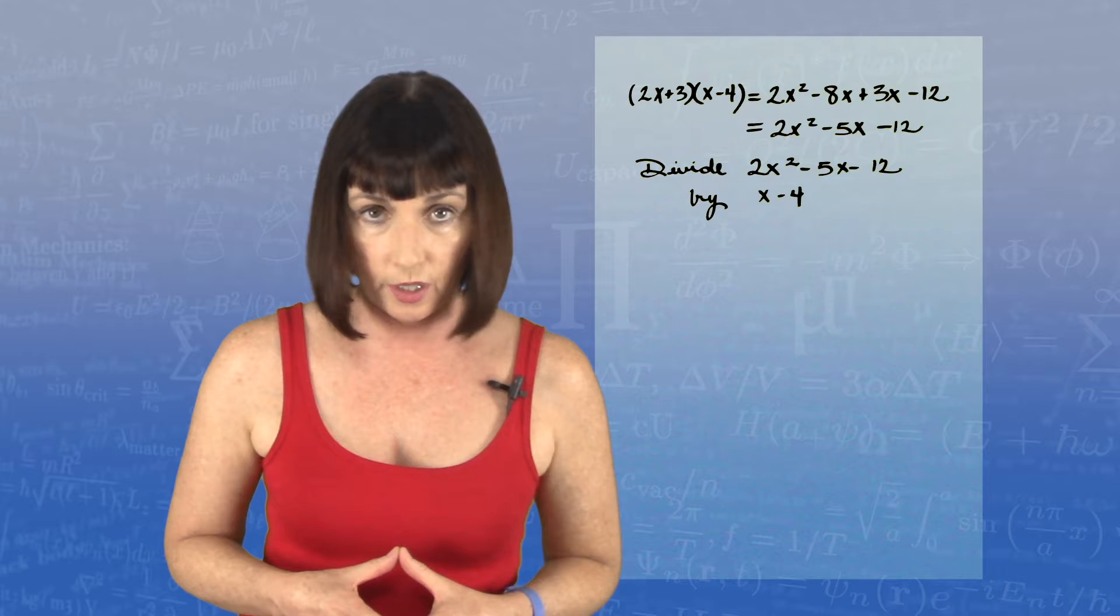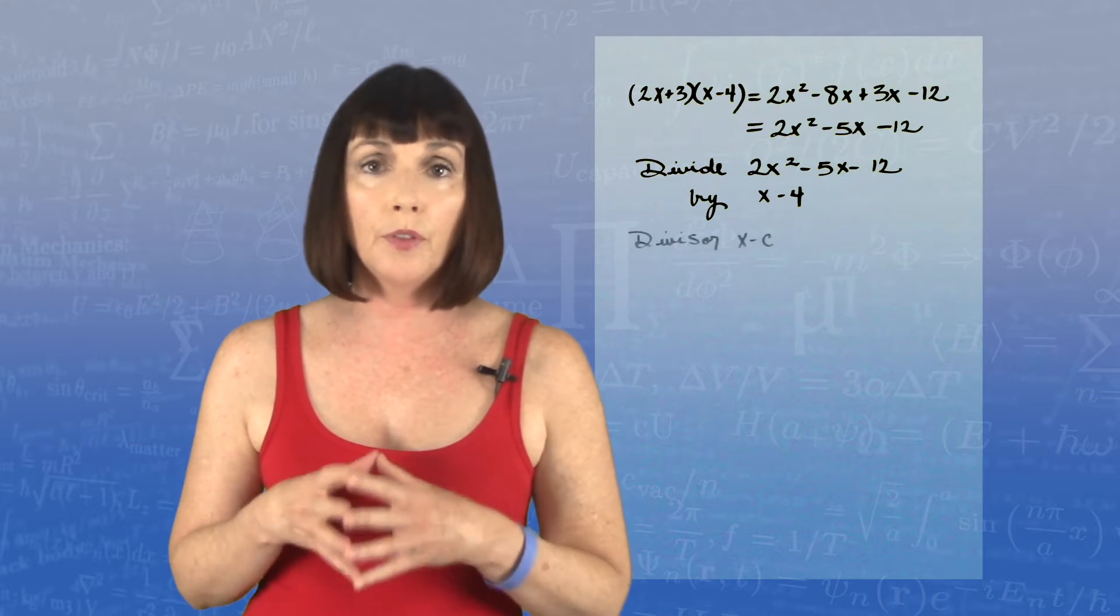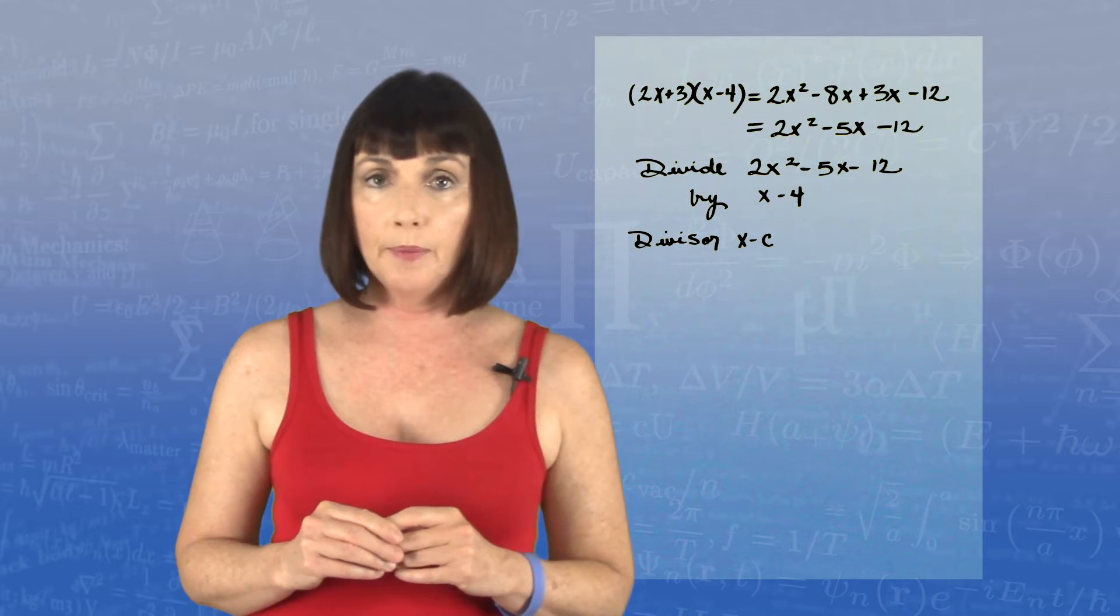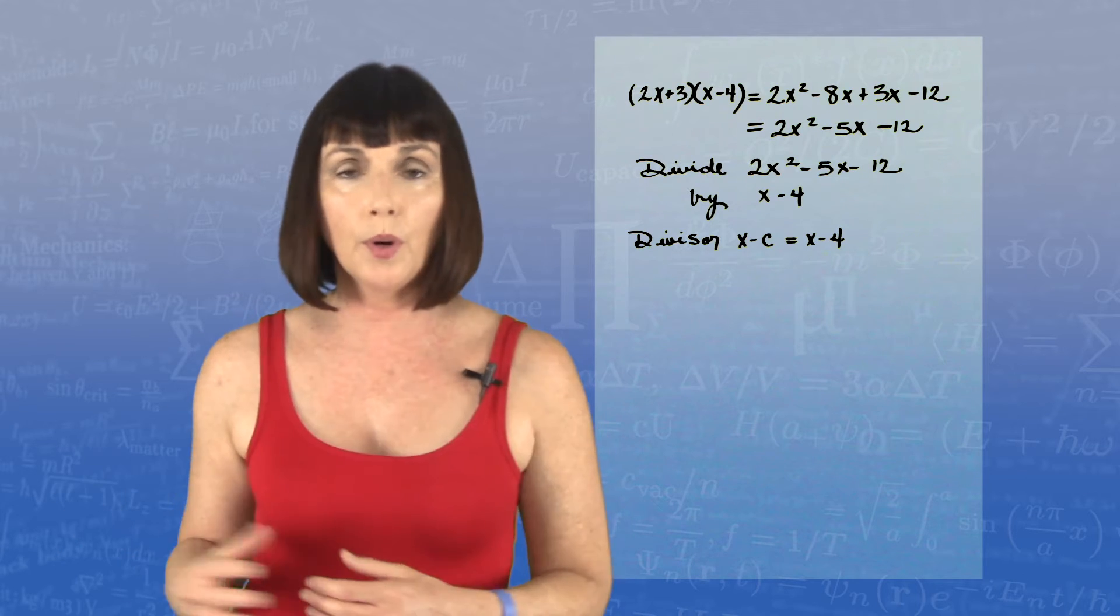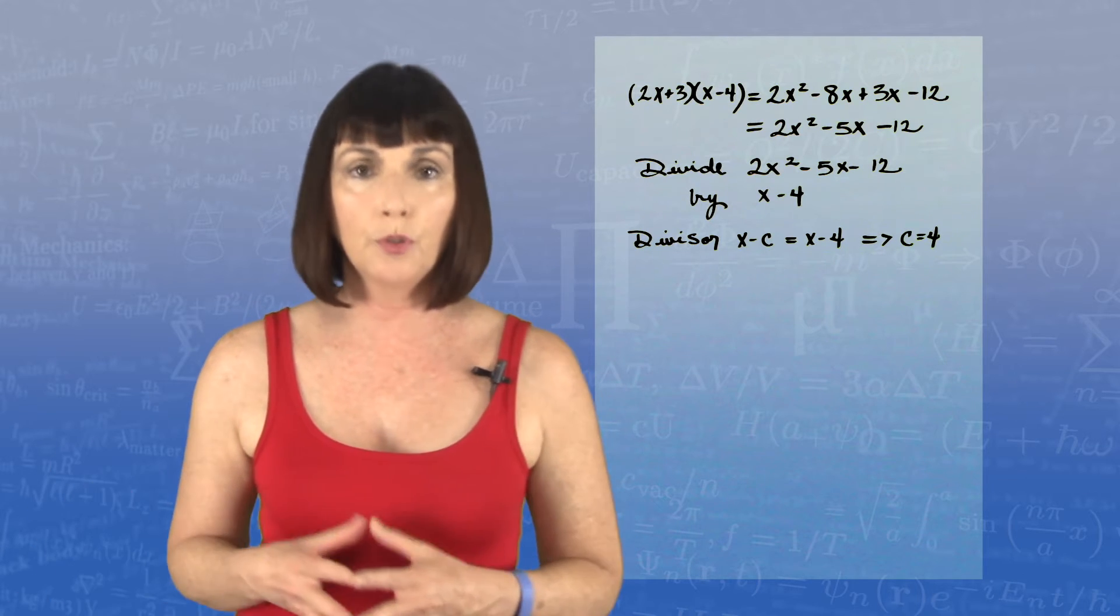To use synthetic division, our divisor must be of the form x minus c. And in this case, it is. It's x minus 4. Therefore, c is equal to 4.